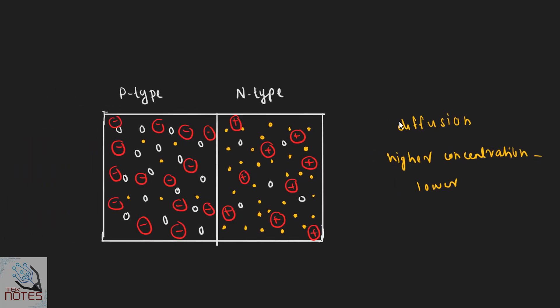When we combine P-type and N-type, consider this: in the P-type region, holes are the majority carriers. But in N-type, holes are the minority carriers — there are only a small number of holes in N-type.